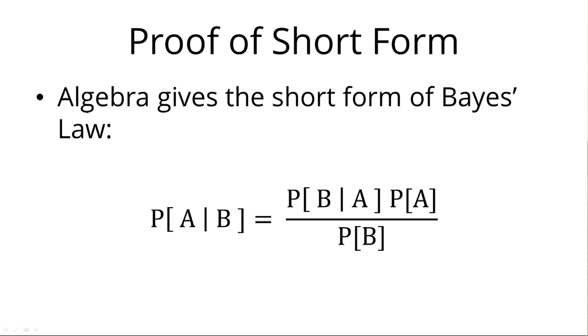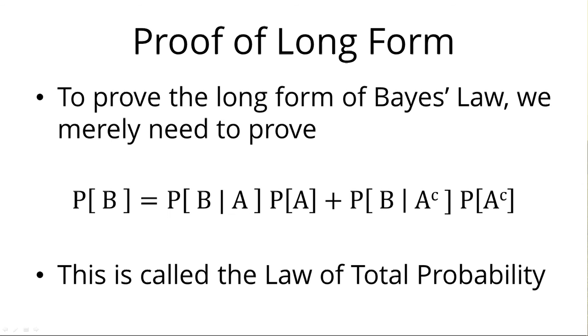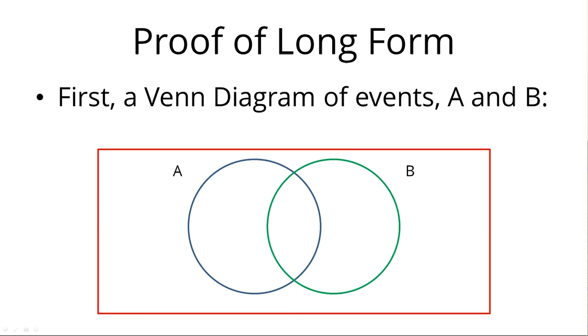Now the proof of the long form would be exactly the same as the proof of the short form, except now we have to deal with that denominator probability of B. So let's look at that for right now. How can we take that probability of B and expand it into two terms? Well when we do that, it's actually called the law of total probability. And here's how it works.